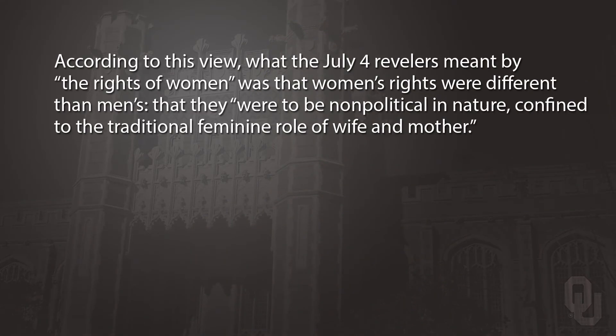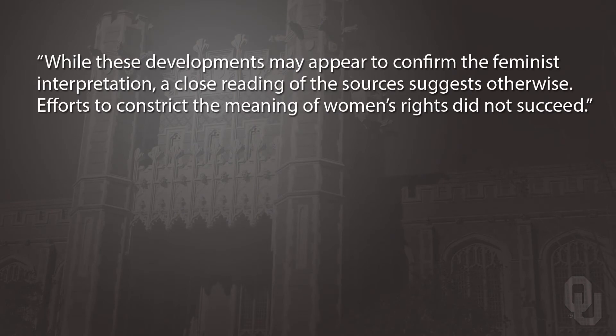Let's see how Zagari created tension. Remember, Zagari's thesis is that women's political rights were on the agenda soon after the Revolution — that's one interpretation of the quotations she started the paper with. But to show that her own thesis is original, Zagari actually starts with a different interpretation: what she calls a feminist interpretation. According to this view, what the July 4th revelers meant by 'the rights of women' was that women's rights were different from men's — non-political in nature, confined to the traditional feminine role of wife and mother. Notice how starting with the more accepted view helped Zagari emphasize what's original in her own thesis: 'While these developments may appear to confirm the feminist interpretation, a close reading of the sources suggests otherwise. Efforts to constrict the meaning of women's rights did not succeed.'